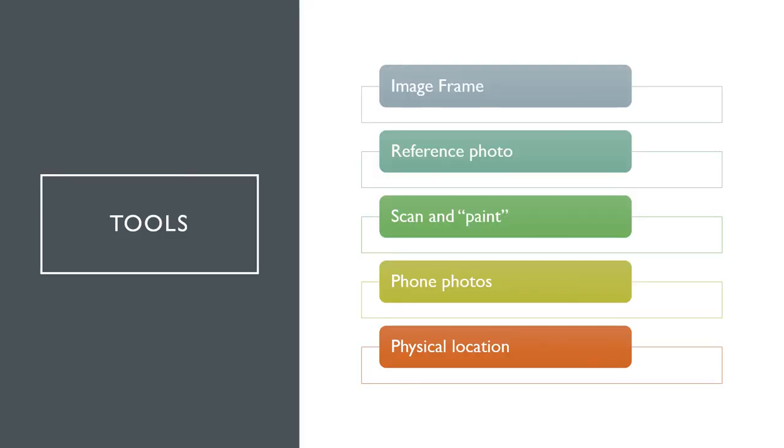So what kind of tools do we have as artists? We can make an image frame. As simple as taking some pieces of map board that you could extend and expand to make a rectangle. And look at your images through that.